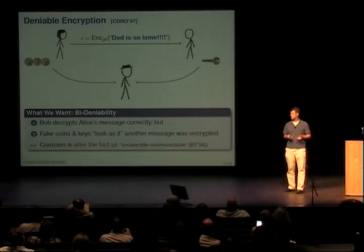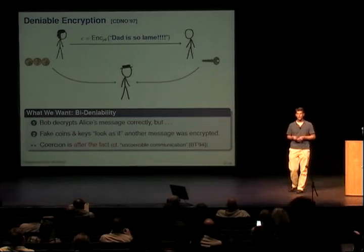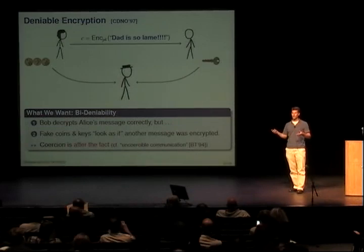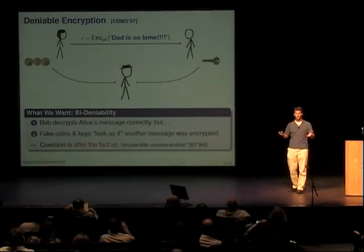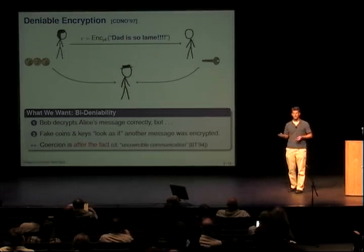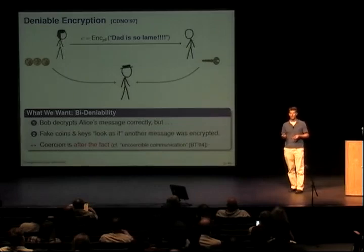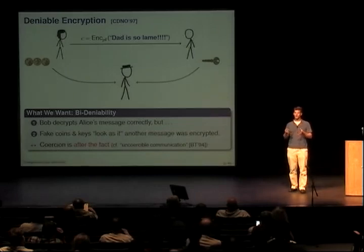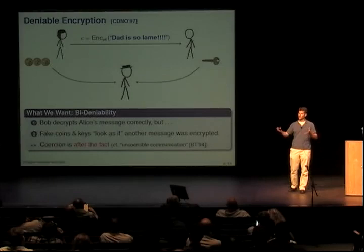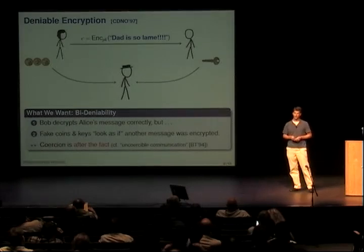An important thing about the model we're considering is that the coercion is always after the fact. So Alice and Bob are able to encrypt and decrypt without any coercion, but then later on they might be coerced to reveal their coins. This is really a dual concept to something that Benelow and Tunistra called uncoercible communication, which would allow Alice, when she's under control of big brother, to send a message but secretly indicate that she's being coerced to send it. So we're talking about after-the-fact coercion here today.